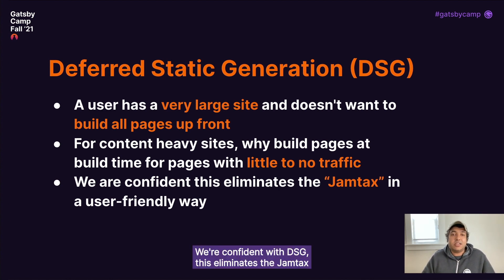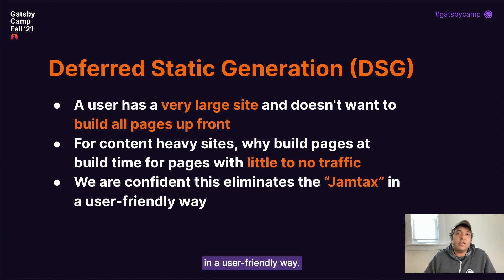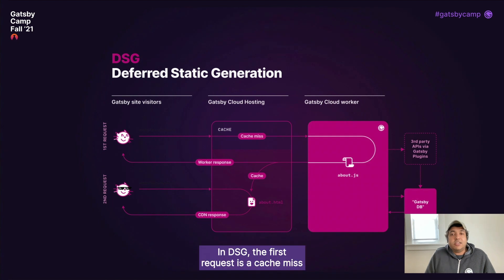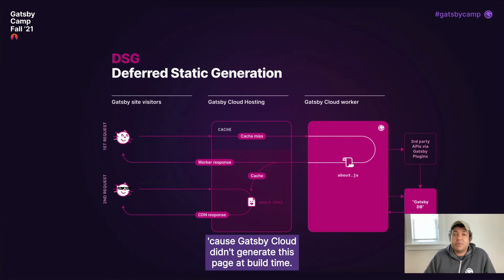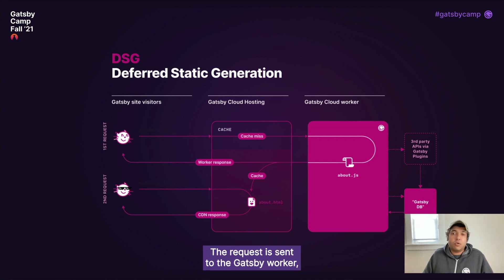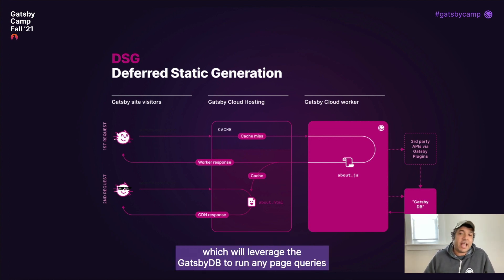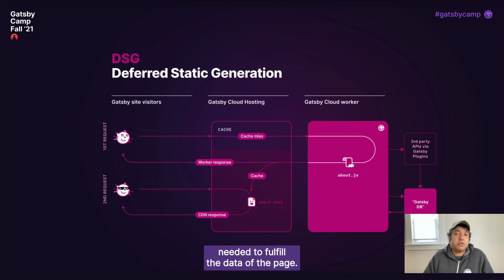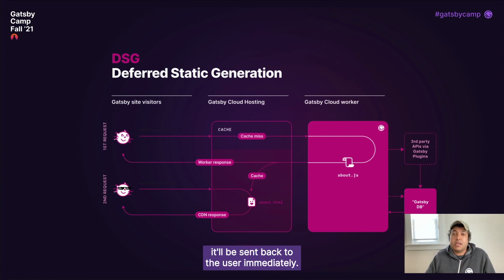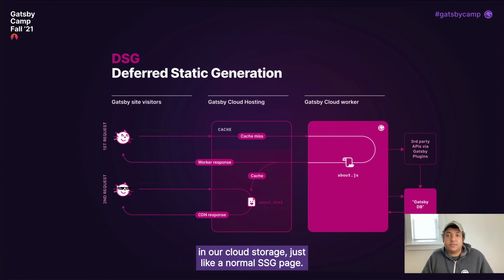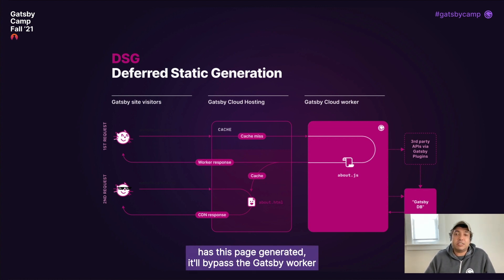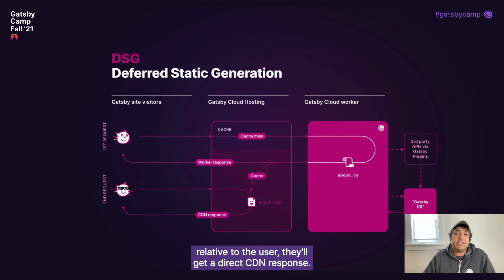We're confident that DSG eliminates the JAMstack tax in a user-friendly way. In DSG, the first request is a cache miss because Gatsby Cloud didn't generate this page at build time. The request is sent to the Gatsby worker, which will leverage the Gatsby DB to run any page queries needed to fulfill the data of the page. Once the page is generated, it will be sent back to the user immediately. In the background, we store all generated artifacts in our cloud storage, just like a normal SSG page. On a second request, because Gatsby Cloud has this page generated, it will bypass the Gatsby worker and serve the page from our cache. If the page has been cached in a CDN pop relative to the user, they'll get a direct CDN response.